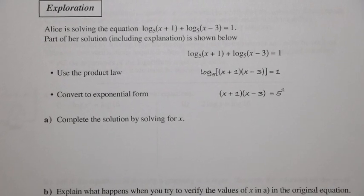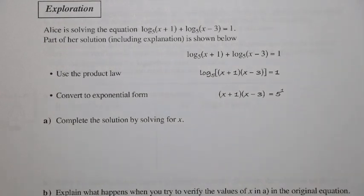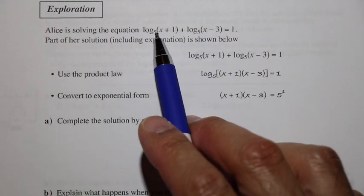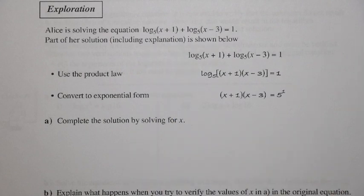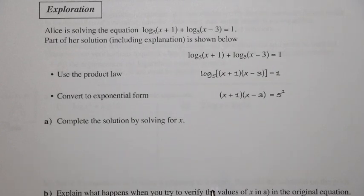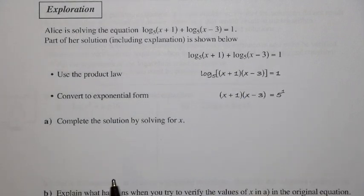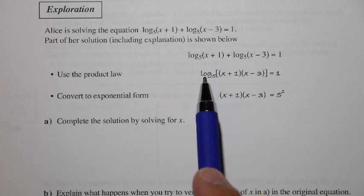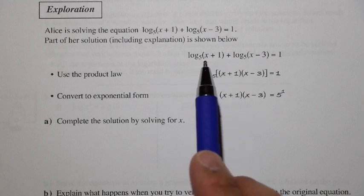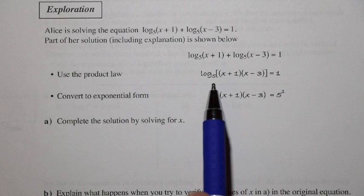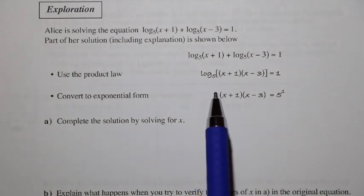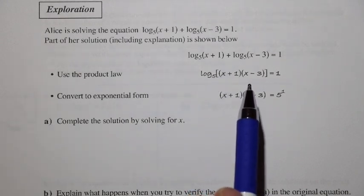Let's take a look at this exploration. We have Alice solving an equation that looks quite complicated at first. We have log base 5 of (x plus 1) plus log base 5 of (x minus 3) is equal to 1. She used the product law of logs, saying that an addition of logs is a log of a product, and that equals 1.